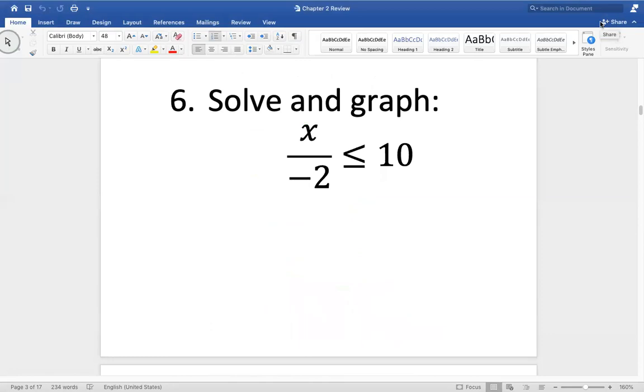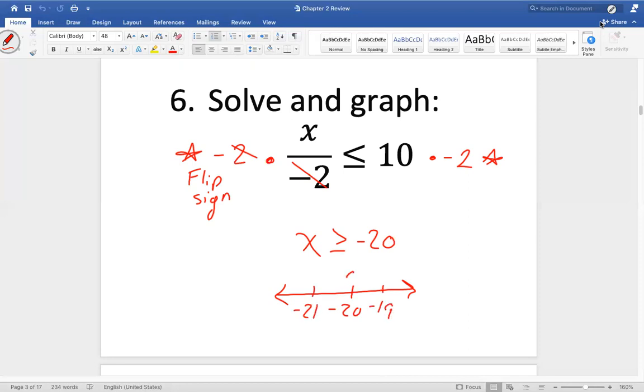Number six, you might want to star only because you're dividing by a negative here. So when you divide by a negative to undo that, what do I have to remember to do with the sign? So those cancel. We're left with X. Flip your sign. Negative 20. Close circle. Eating the X. Shade to the right.